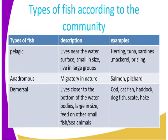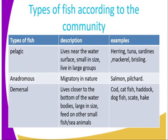Examples of pelagic fish include the herring, tuna, sardines, mackerel, and bristles. The second class is the anadromous fish. Anadromous fish are migratory in nature — they keep migrating from one place to another. Examples include the salmon and the pilchard.